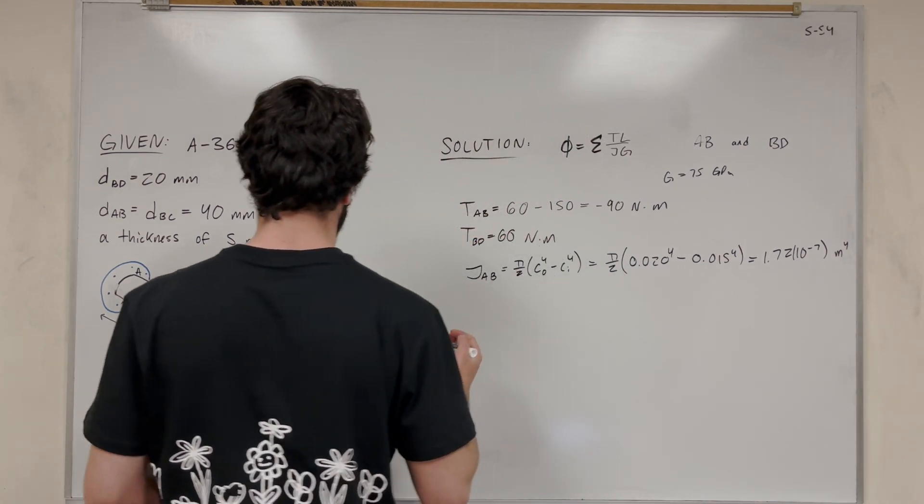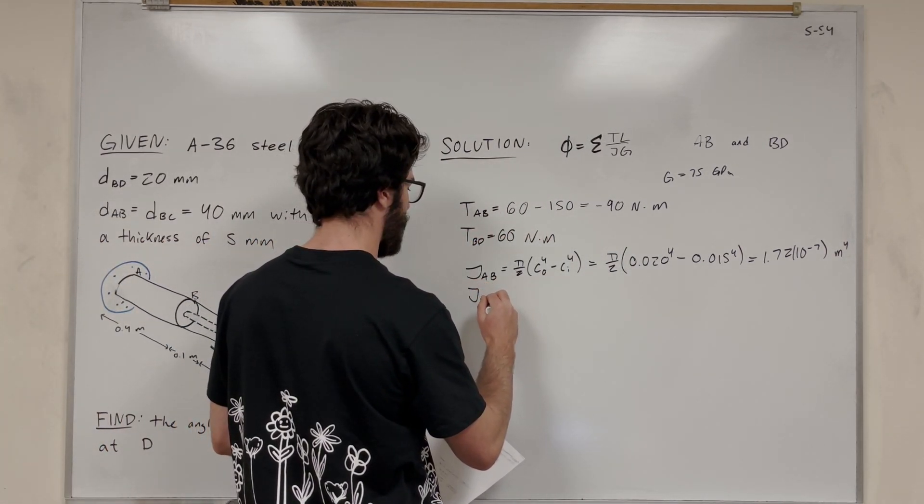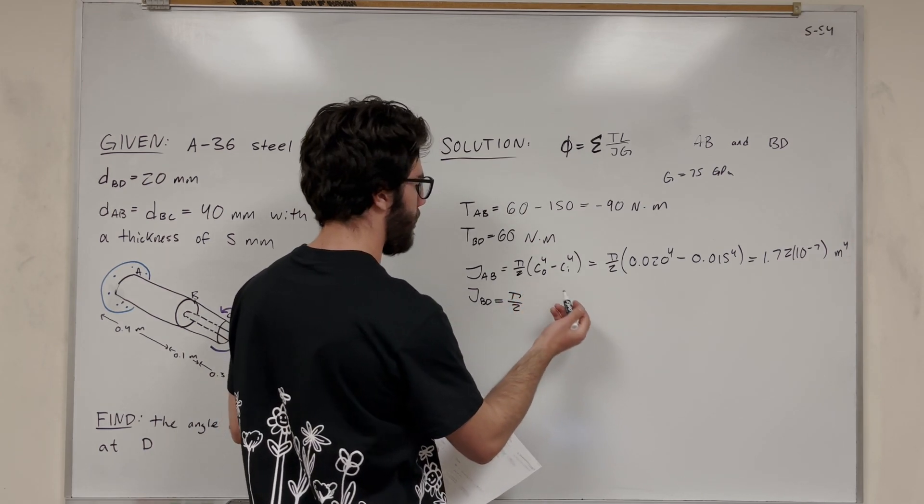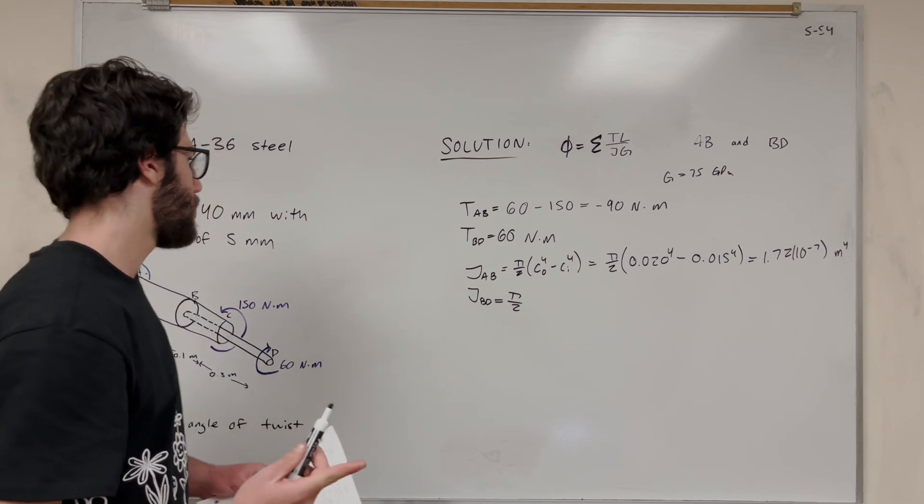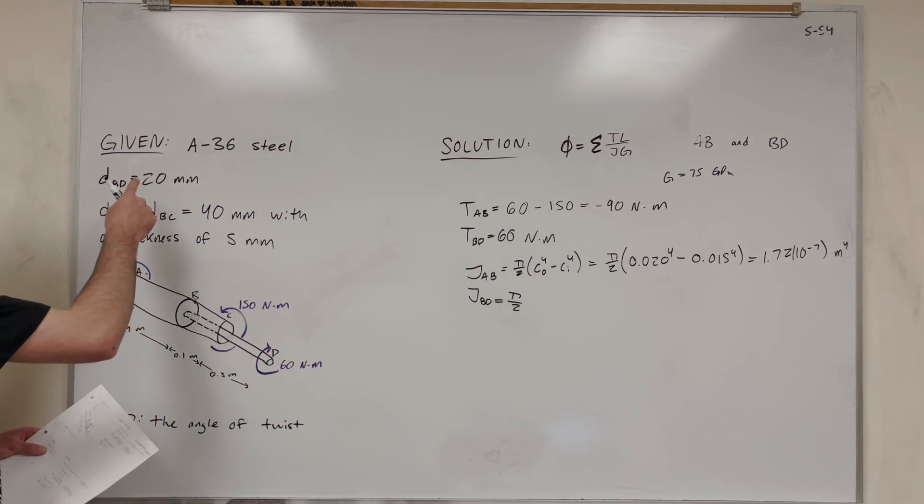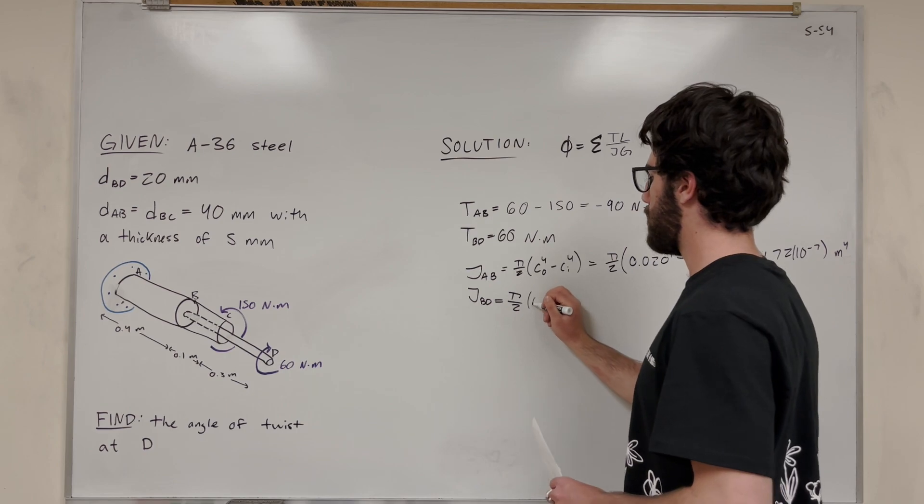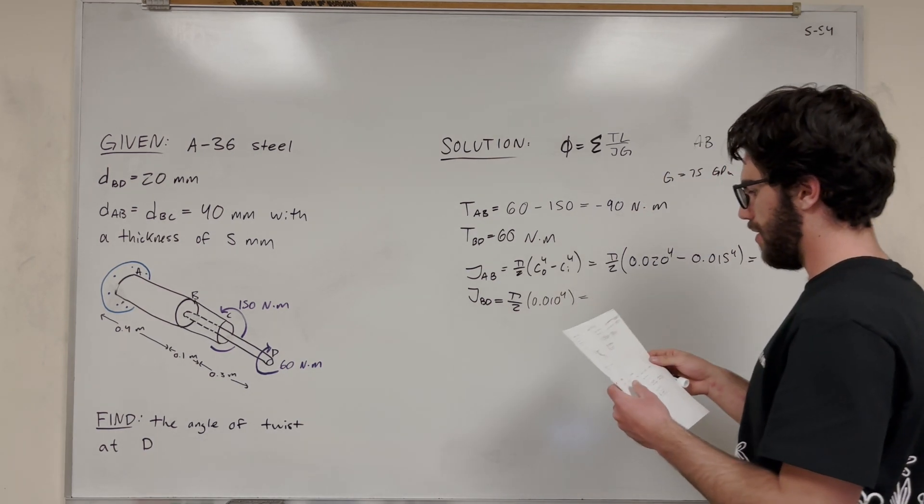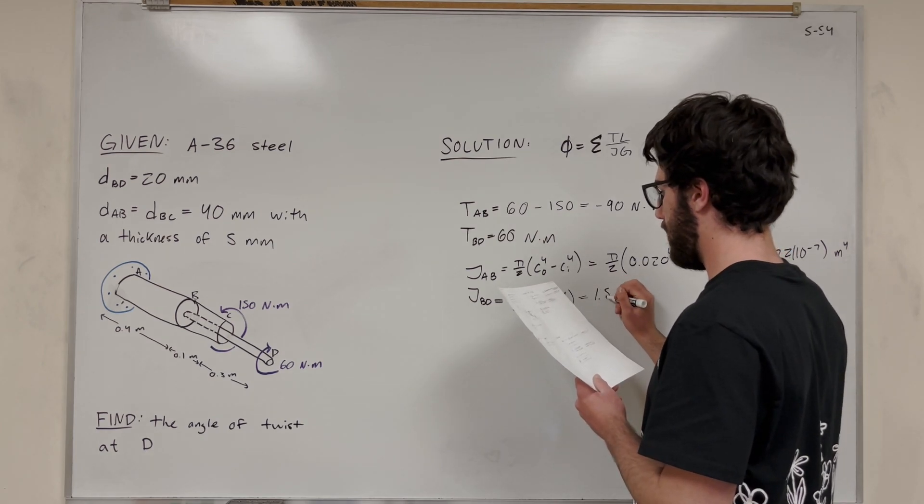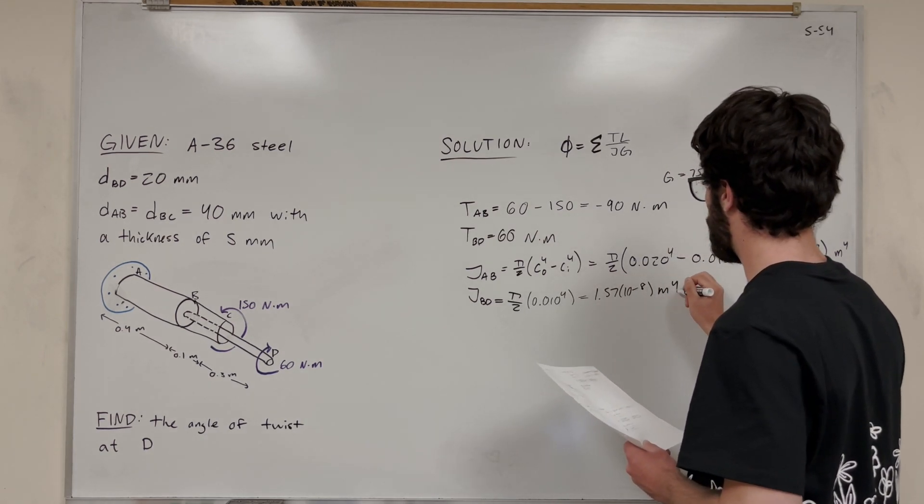Okay, so then let's find the polar moment of inertia for BD. J BD. Now this equation, pi over 2. Now instead of outer radius minus inner radius, there's only going to be one radius because it's solid. So we're just going to do radius to the 4th. So we know its diameter is 20, so it's going to be 0.010 to the 4th. Now if you do this, you get 1.57 times 10 to the negative 8th meters to the 4th.